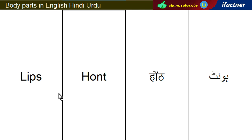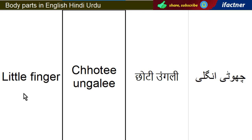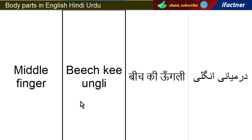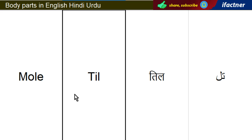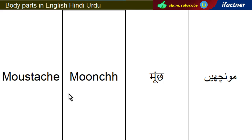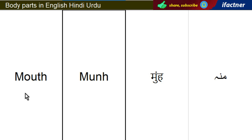Haunt — Lips. Chhoti ongli — Little Finger. Beech ki ongli — Middle Finger. Till, Mool — Mole. Moonch — Moustache.